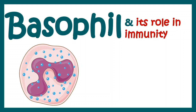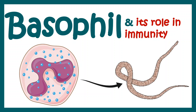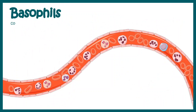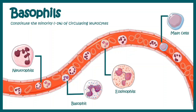In this video, we will talk about basophil and its role in immunity. Basophil constitutes the minority of the circulating leukocytes. In circulation, basophils constitute 1% of the total leukocytes, whereas neutrophils constitute more than 50% of the leukocytes.